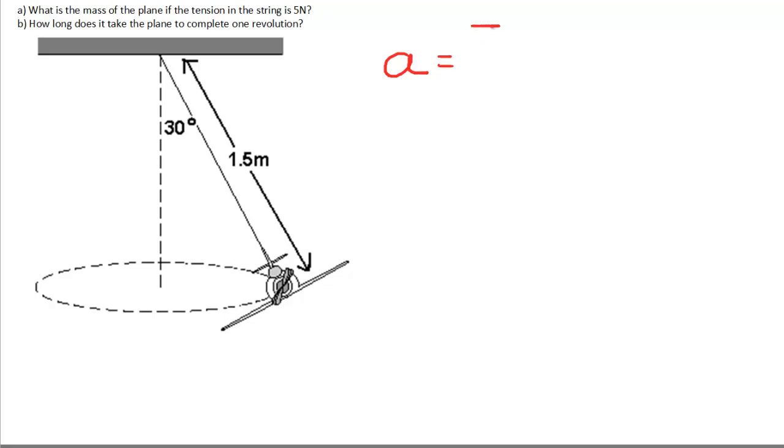The acceleration is F_net, which is the sum of the forces, divided by the mass. Now the forces have to be added as vectors.